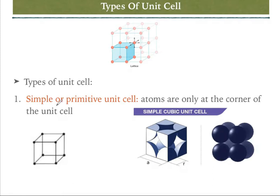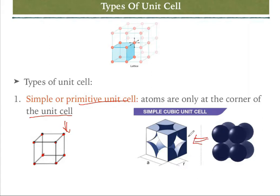The first type of unit cell is the simple or primitive unit cell. In the primitive unit cell, atoms are only at the corners of the unit. You can see this picture — this is one simple or primitive unit cell. The atoms are present on the corners. A cube has a total of eight corners, so atoms are present at all eight corners.